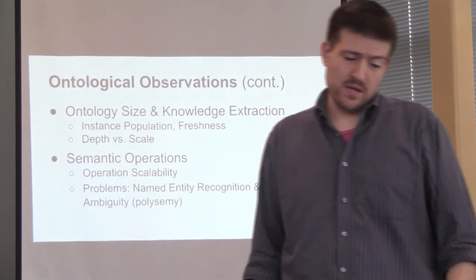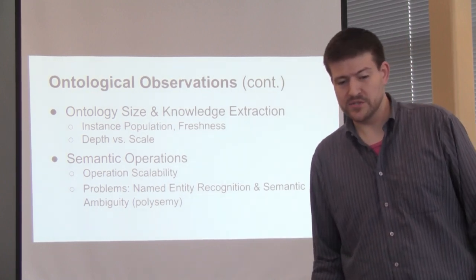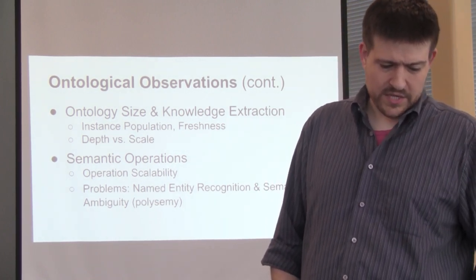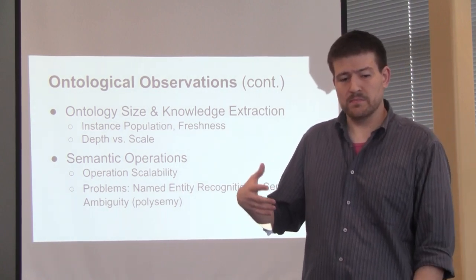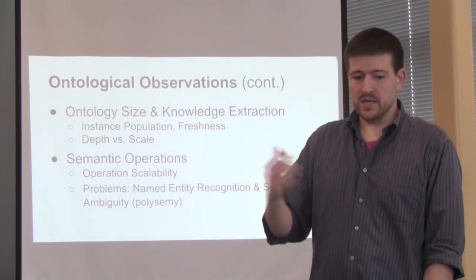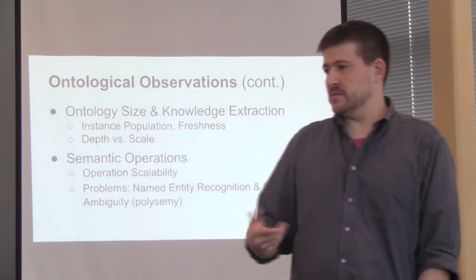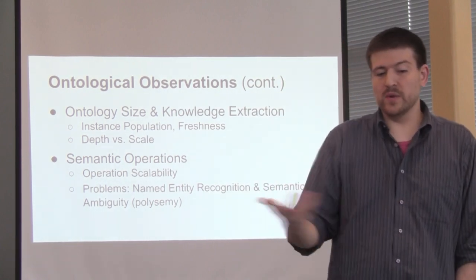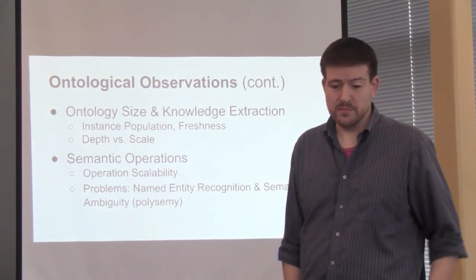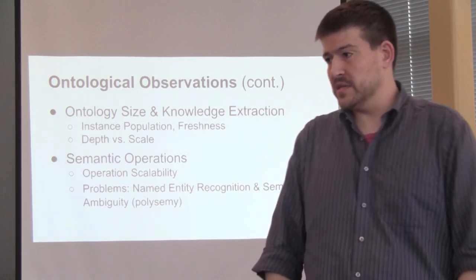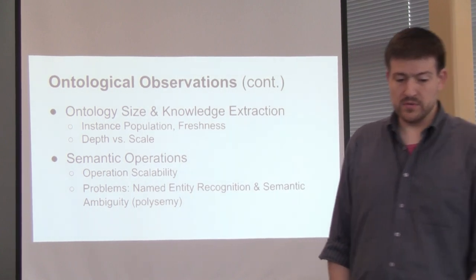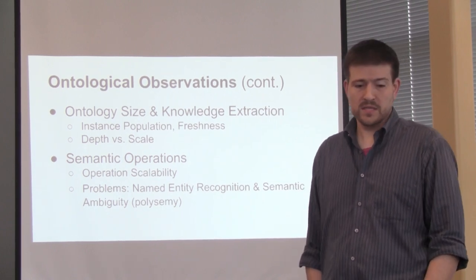Depth versus scale — scalability is an issue as soon as you start to get lots of data. Semantic operations refers to whether a business does all the things we've talked about: automatically extracting data, updating ontologies, providing search, providing actionable intelligence. The key issues are scalability — maybe somebody could implement a simple demonstration but it doesn't scale to enterprise size. And named entity recognition and semantic ambiguity, which we talked about in the last class.